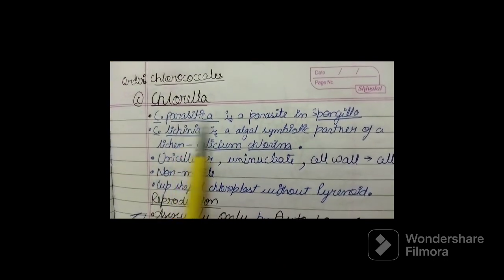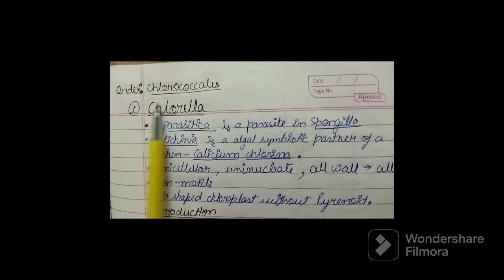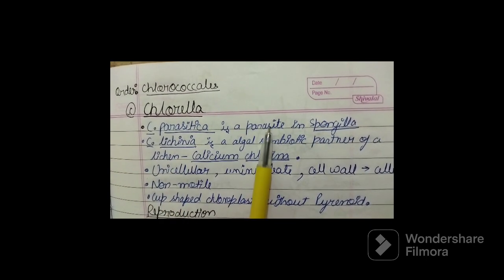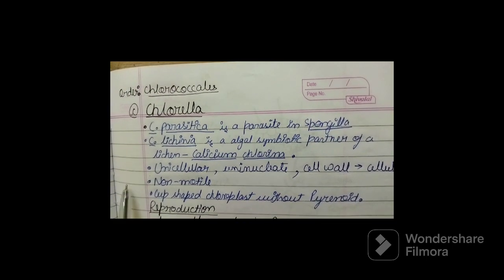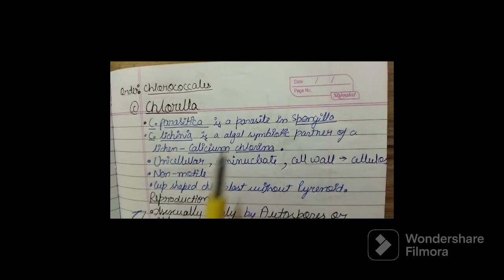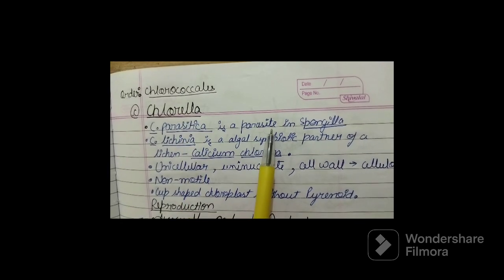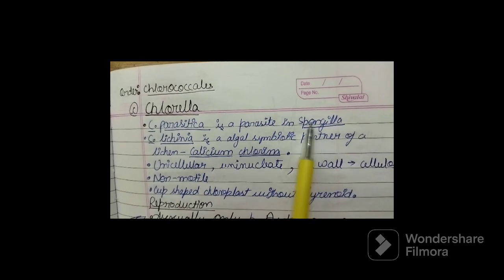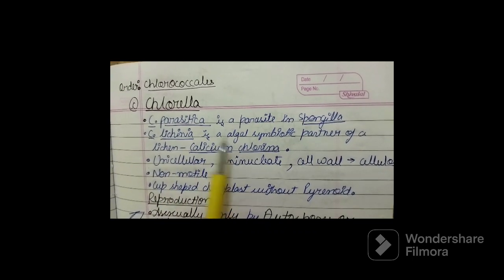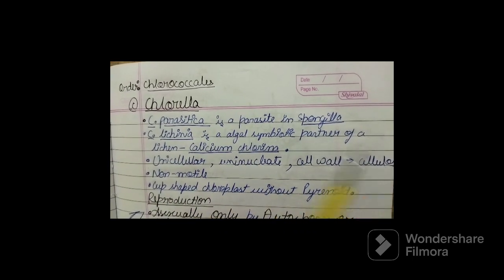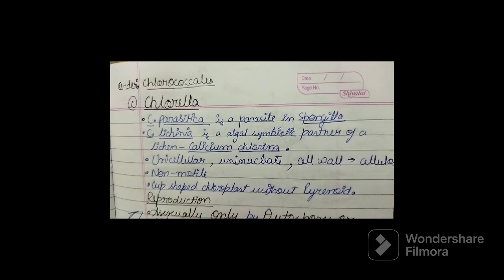Now there are certain species of Chlorella which are parasitic as well as symbiotic in nature. Chlorella parasitica is a parasitic species which grows on Spongilla. Chlorella licheniae is an algal symbiotic partner of a lichen.